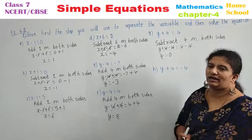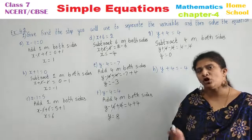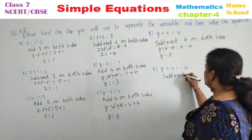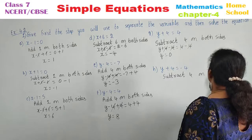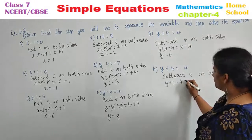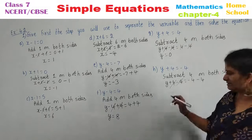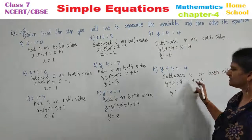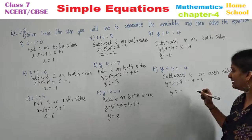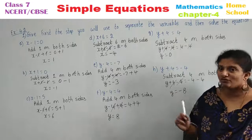Sub-question h: y plus 4 equals minus 4. Other than the variable, you have plus 4; its opposite is minus 4, so subtract 4 on both sides. y plus 4 minus 4 equals minus 4 minus 4; plus 4 minus 4 cancels. If you have both negative, take the negative sign and add the numbers: 4 plus 4 is 8, so y equals minus 8.